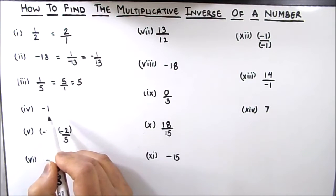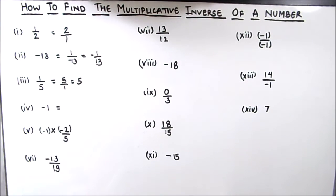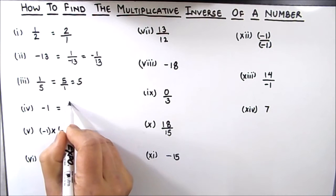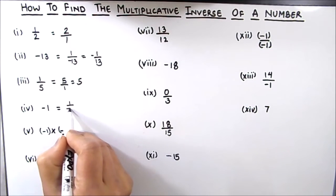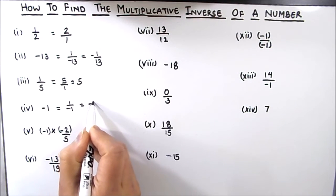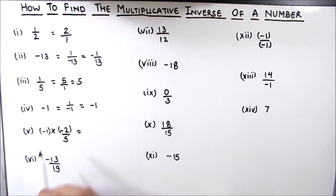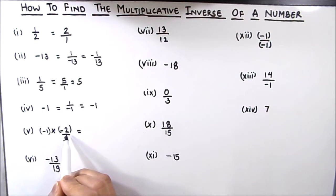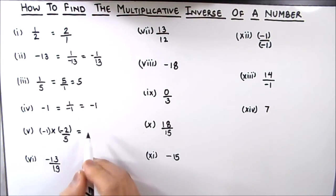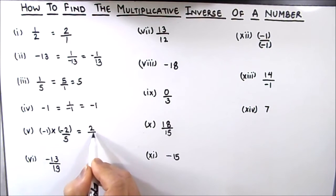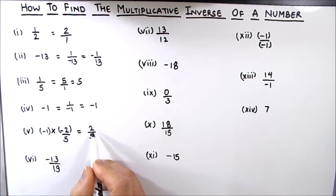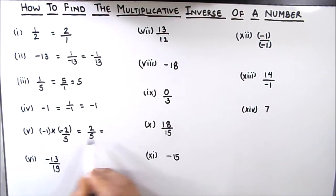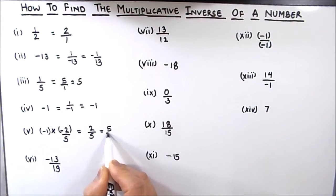The next number is negative 1. The reciprocal of negative 1 will be 1 by negative 1, which is equal to negative 1. The next number is an expression, so first we will simplify it: negative 1 times negative 2 will be 2, and it is divided by 5. Now we need to find the multiplicative inverse of 2 by 5. The reciprocal will be 5 by 2.